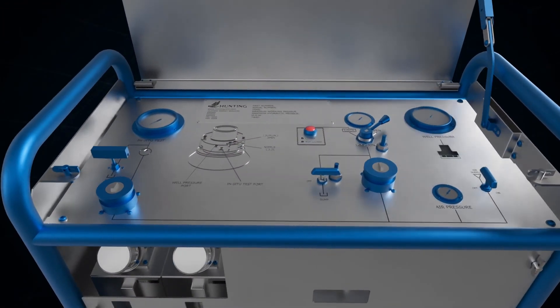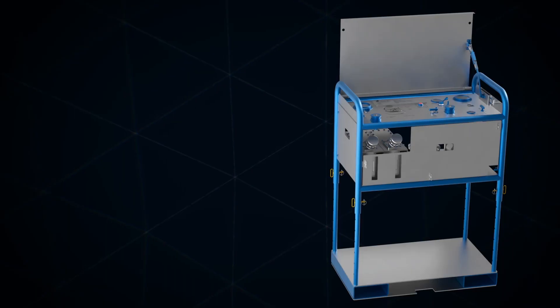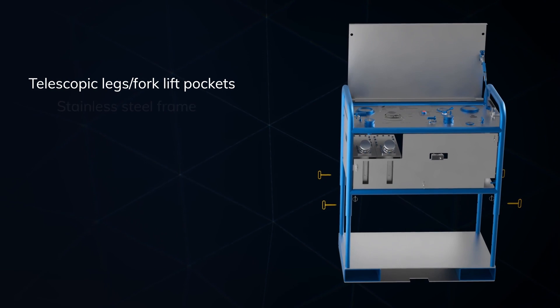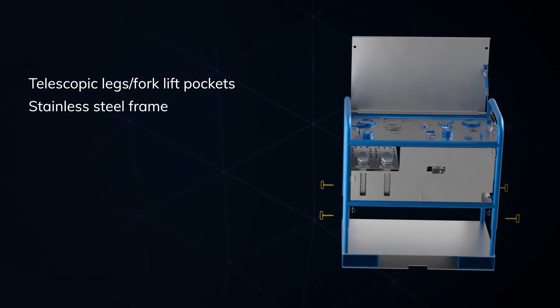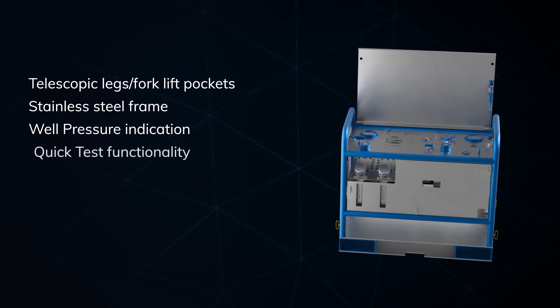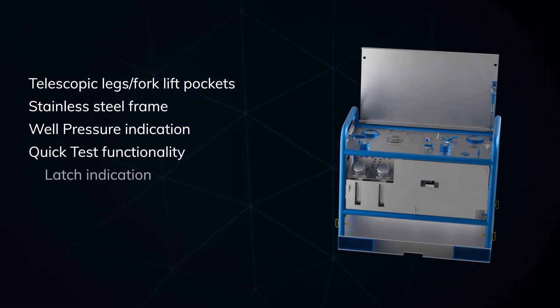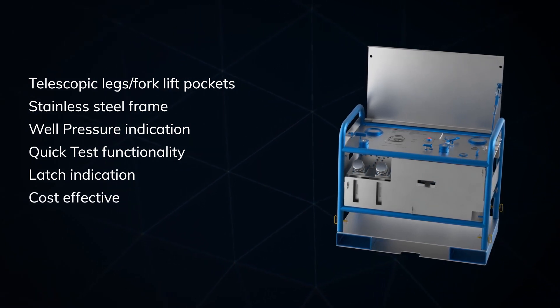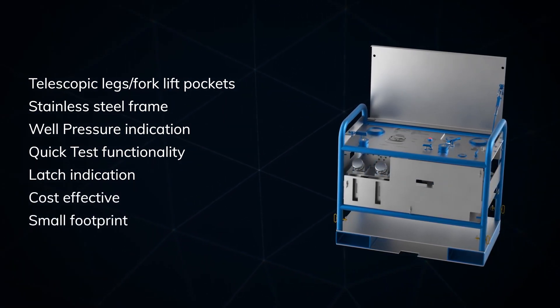Features and benefits of the control panel include telescopic legs and forklift pockets, a stainless steel frame, well pressure indication, quick test functionality, latch indication, cost effectiveness, and a small footprint.